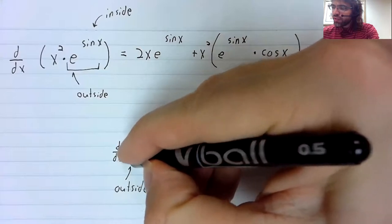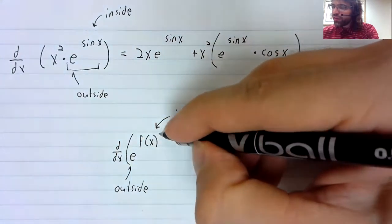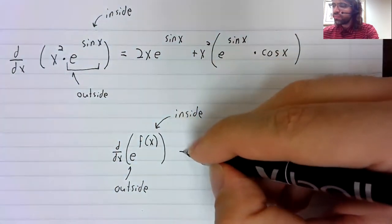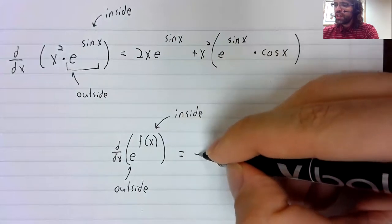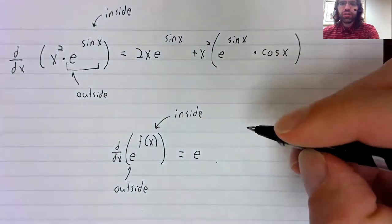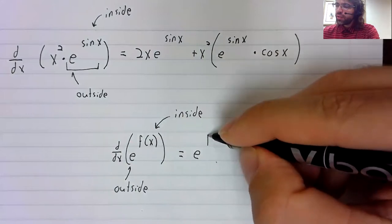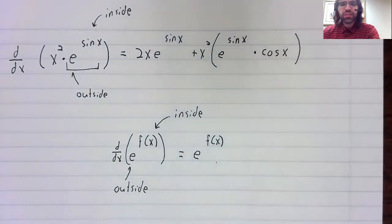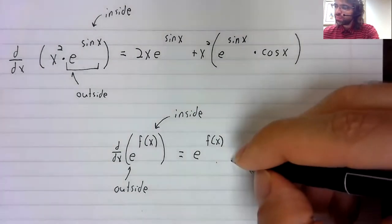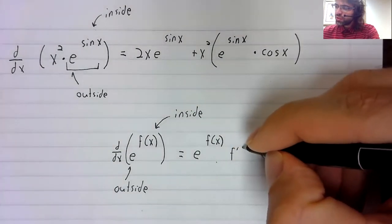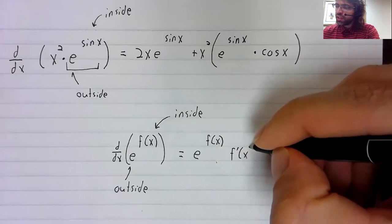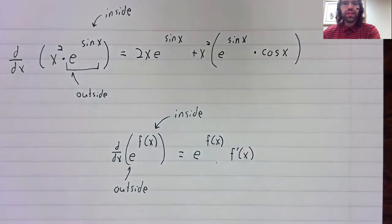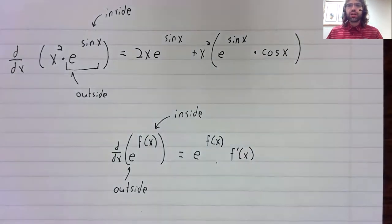And the derivative of e to the f of x is the derivative of the outside function with the inside function stuck inside of it, times the derivative of the inside function.